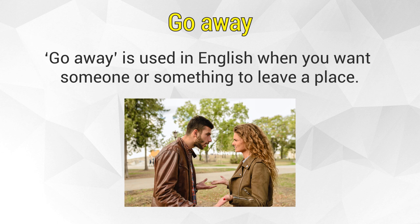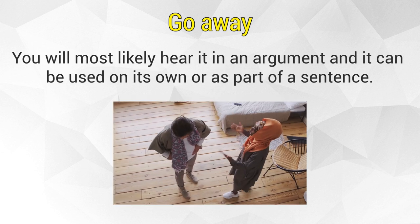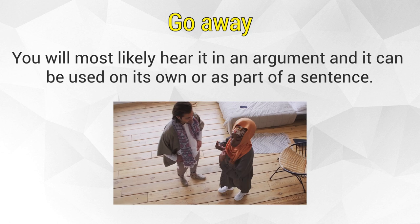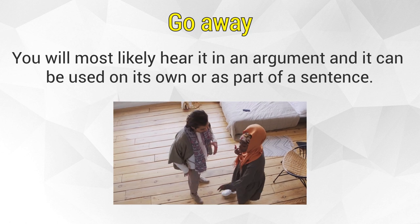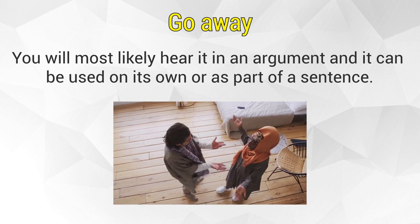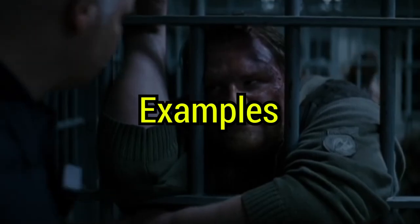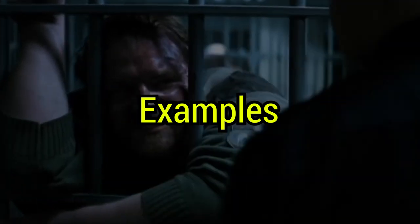To start, we have the phrasal verb 'go away,' which is used in English when you want someone or something to leave a place. You will most likely hear it in an argument, and it can be used on its own or as part of a sentence. Let's take a look at some examples.